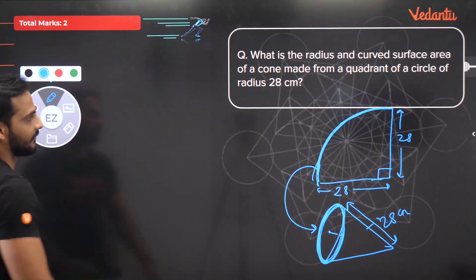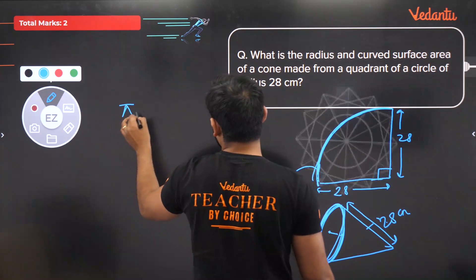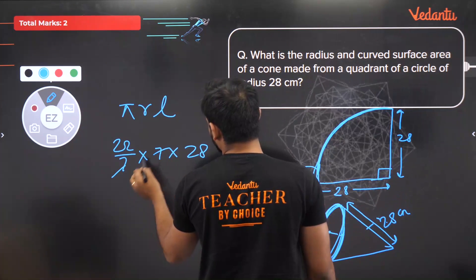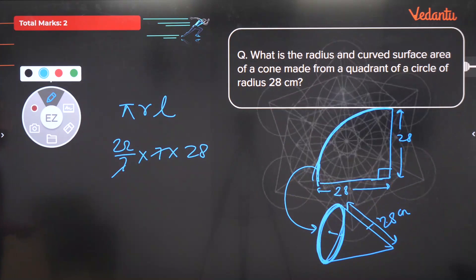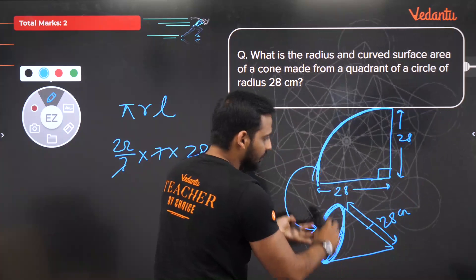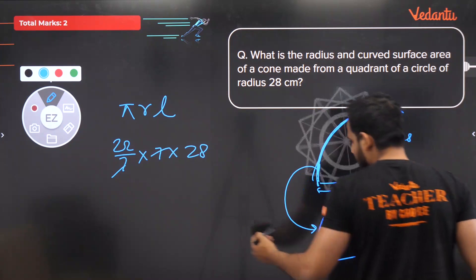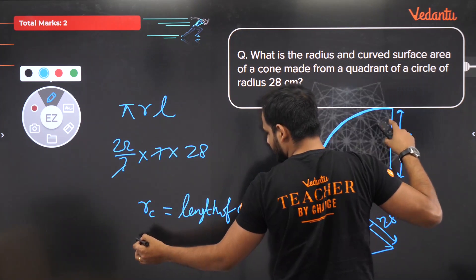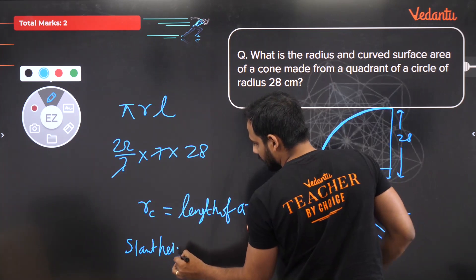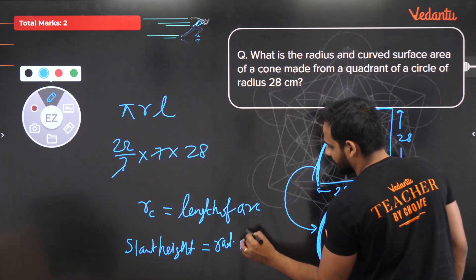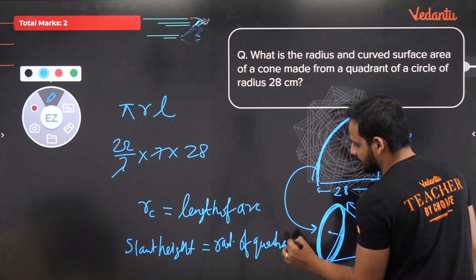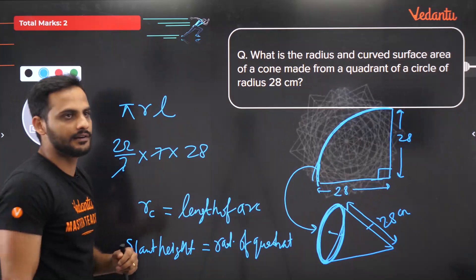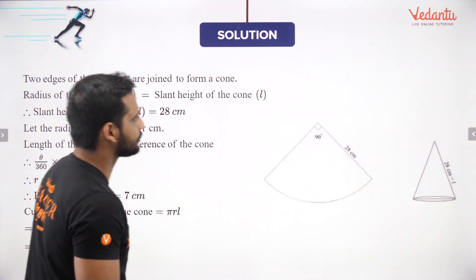So the radius of the cone is 7 cm. Curved surface area = πrl = (22/7) × 7 × 28 = 22 × 28 = 616 cm². Key principle: when forming a cone from a quadrant, the slant height of the cone equals the radius of the quadrant, and the circumference of the cone's base equals the arc length of the quadrant.